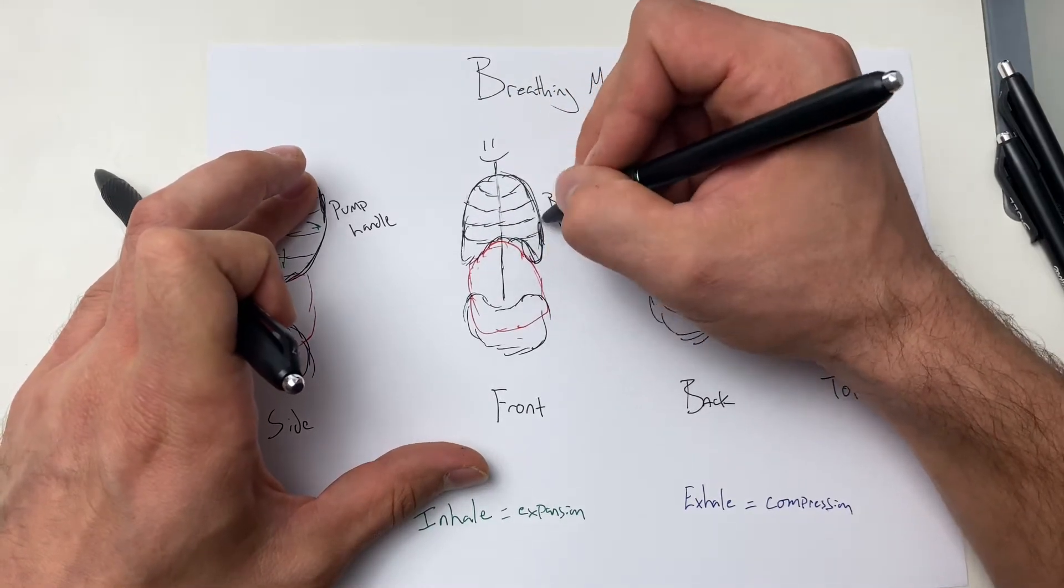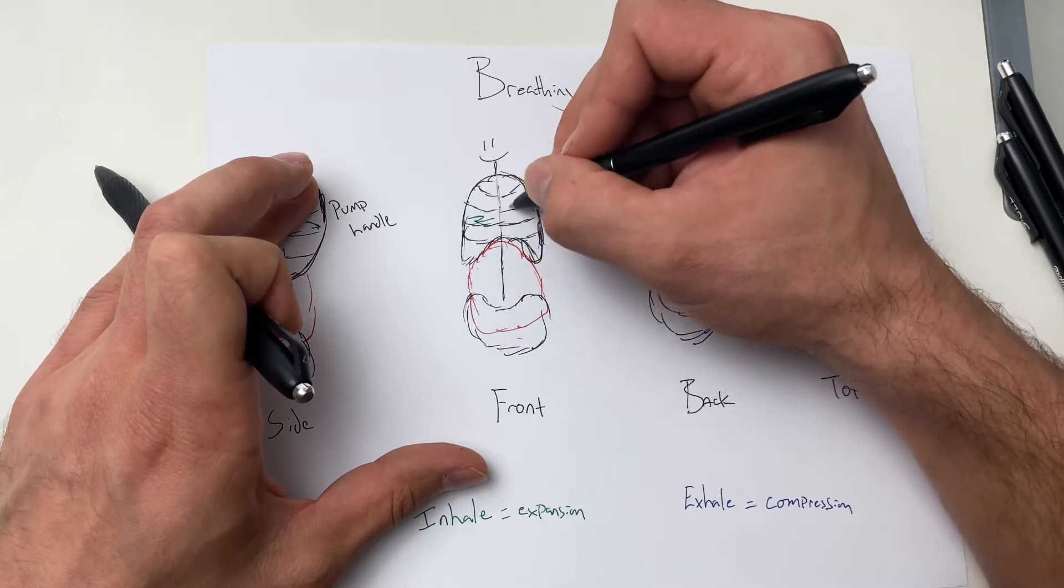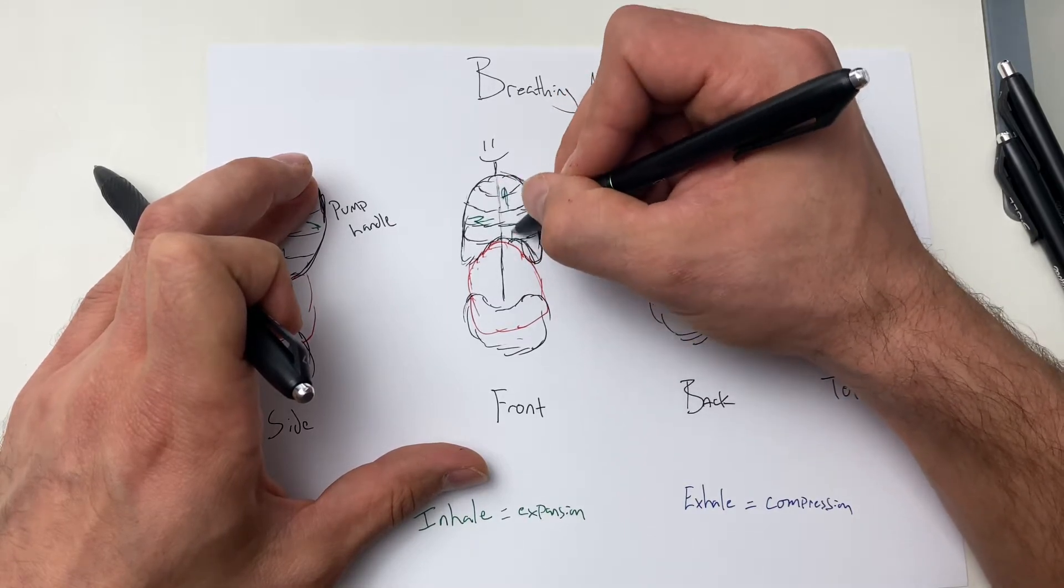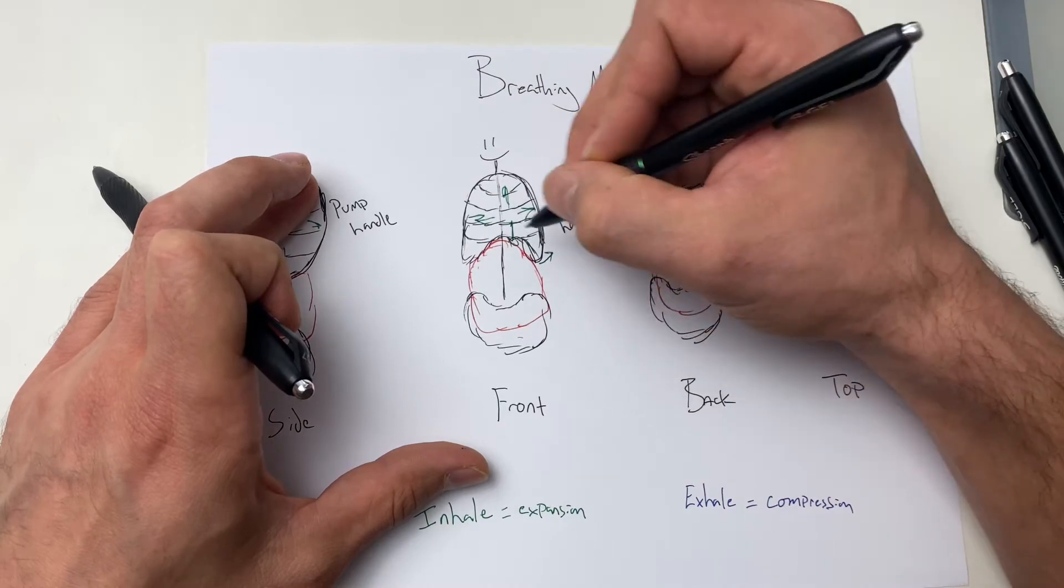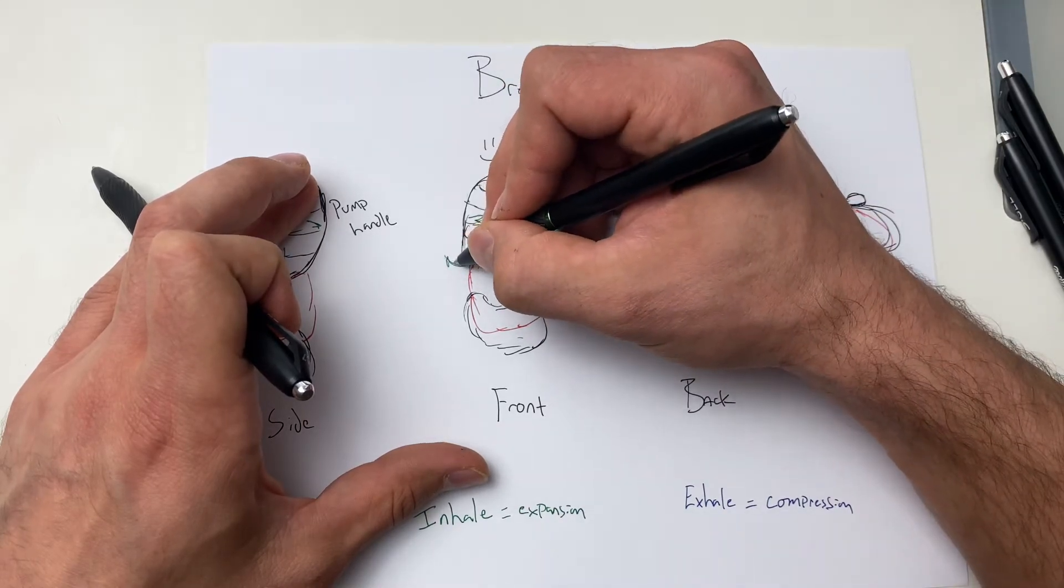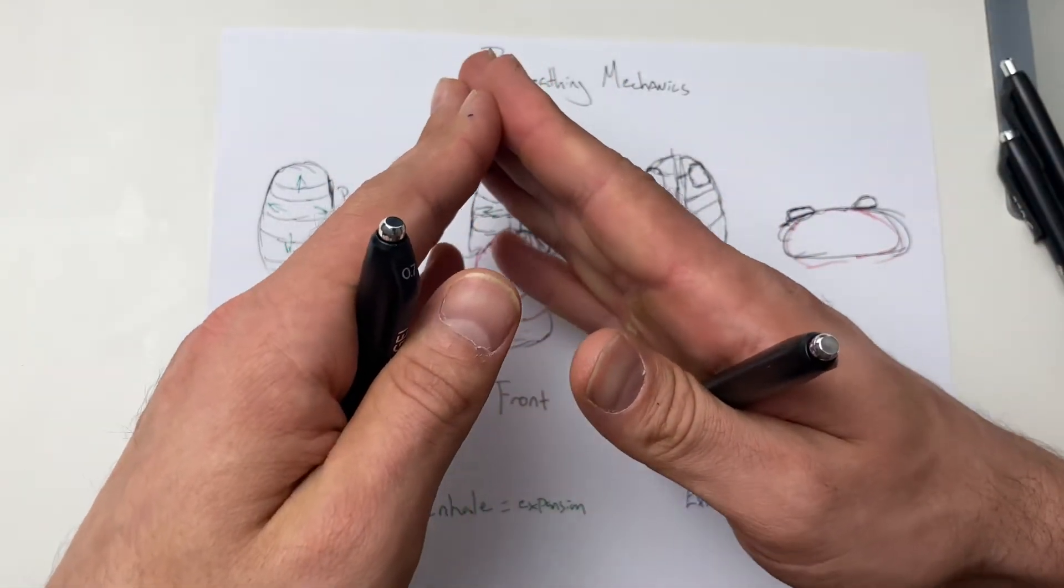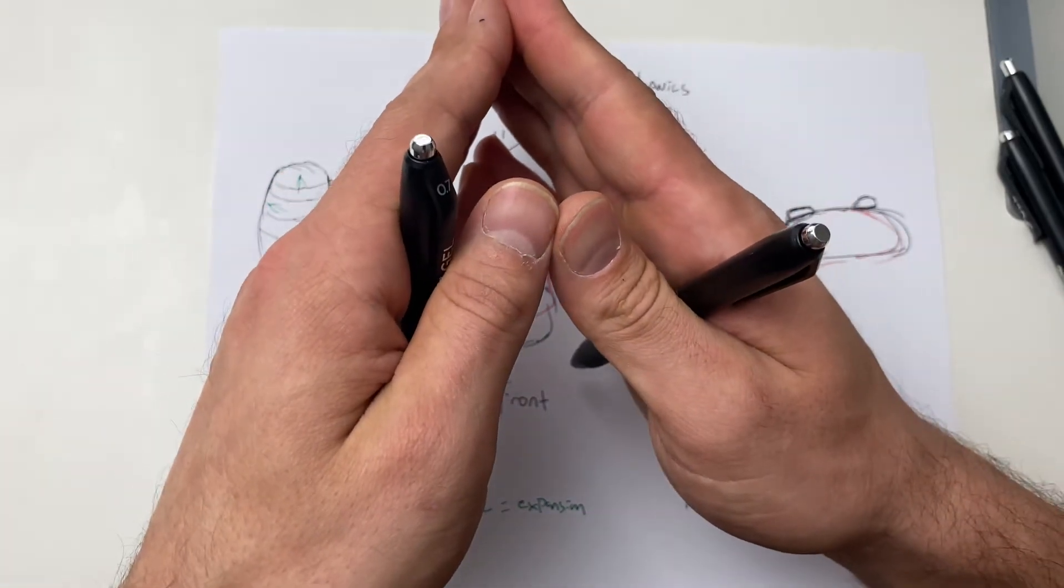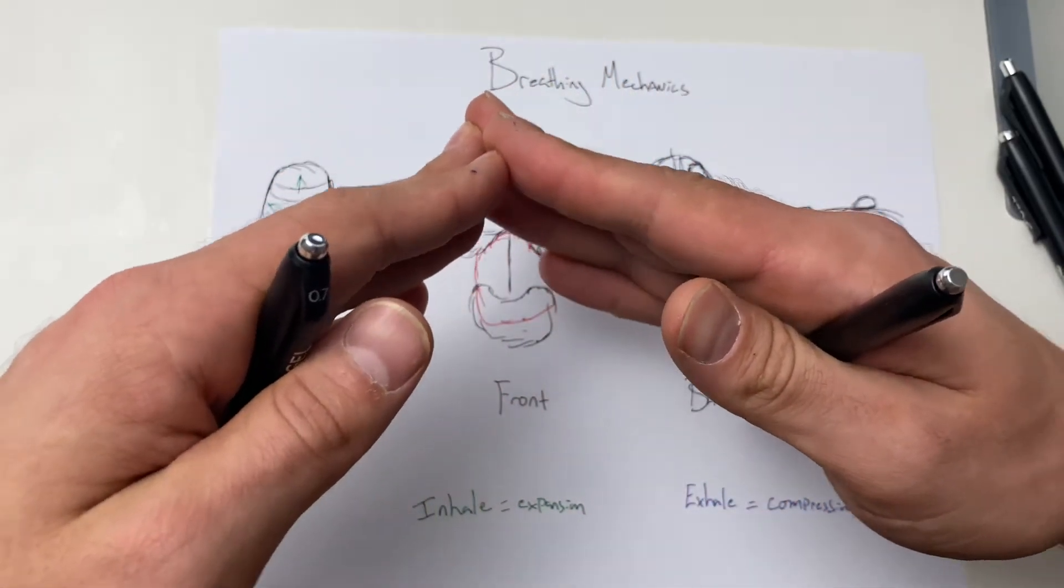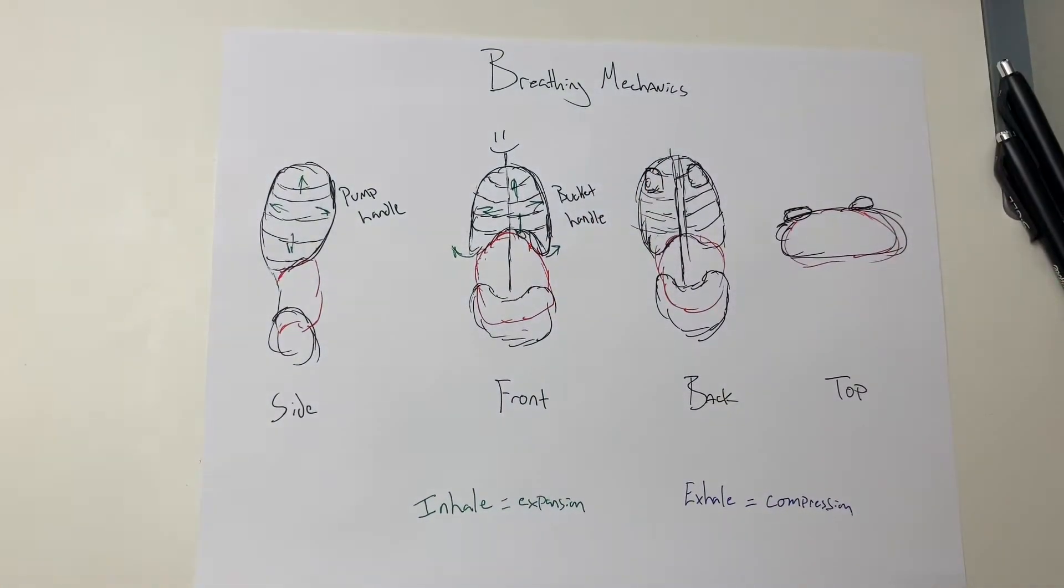So we take this deep breath in, and the ribs should go out to the side laterally. The bucket handle, the ribs should go out to the side. So we take a deep breath in, like a bucket handle, then we exhale, they come down, in, and then we come down. So like you're lifting the side of a handle on a five-gallon bucket.